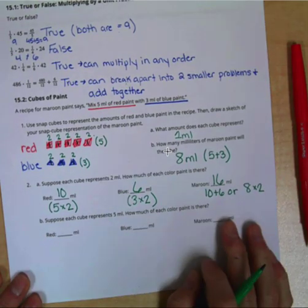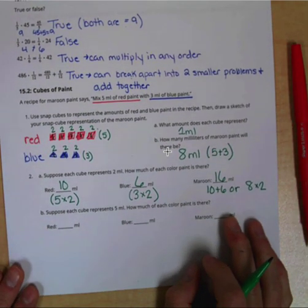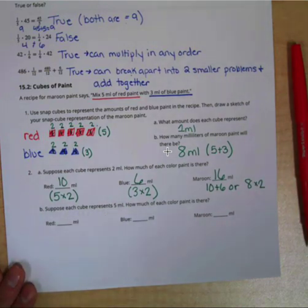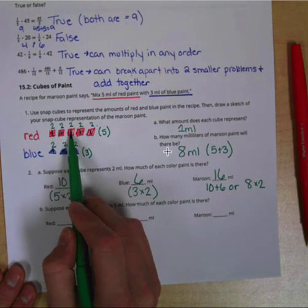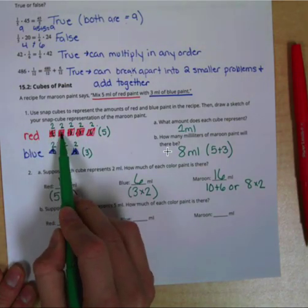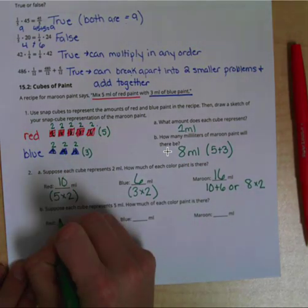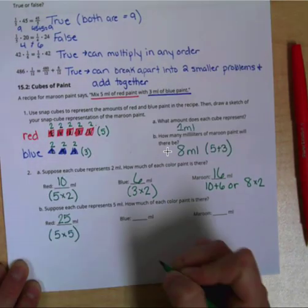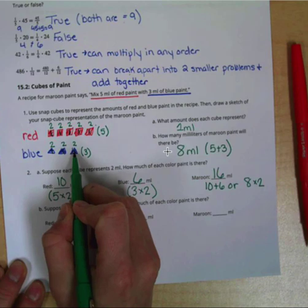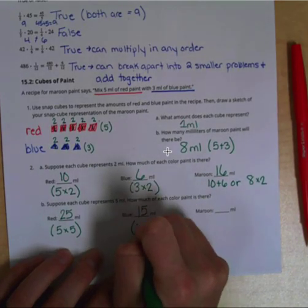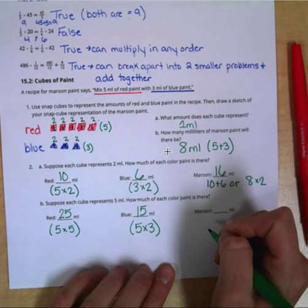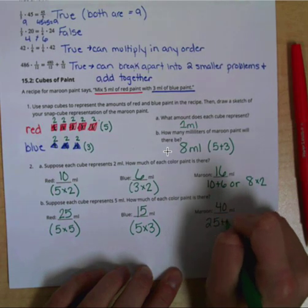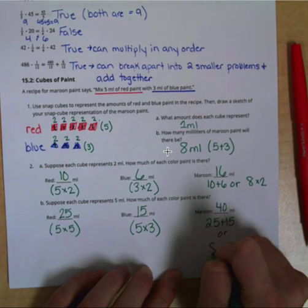Now suppose each cube represented 5 milliliters. The red blocks would be 5, 10, 15, 20, 25 — so there would be 25 red, found by multiplying 5 times 5. For blue: 5, 10, 15, or 5 times 3 equals 15. We would have a total of 40 milliliters, found by doing 25 plus 15, or 8 times 5.